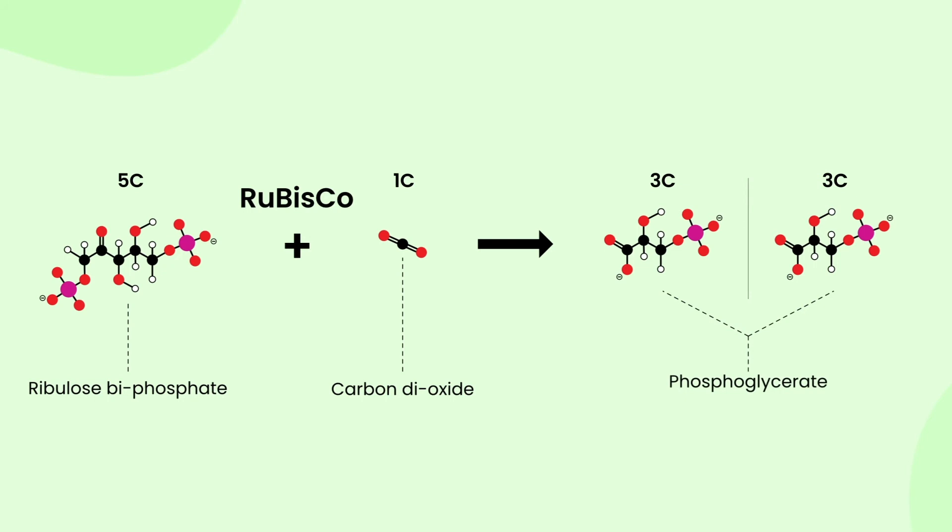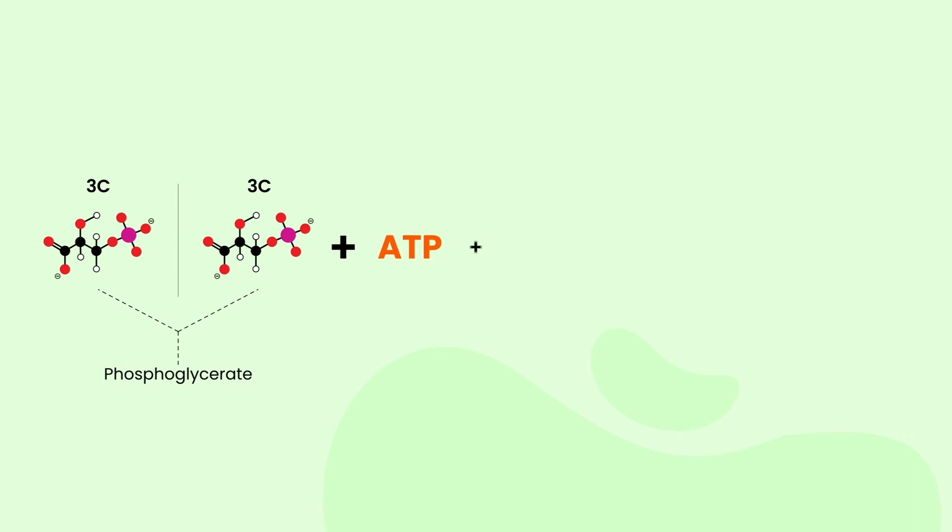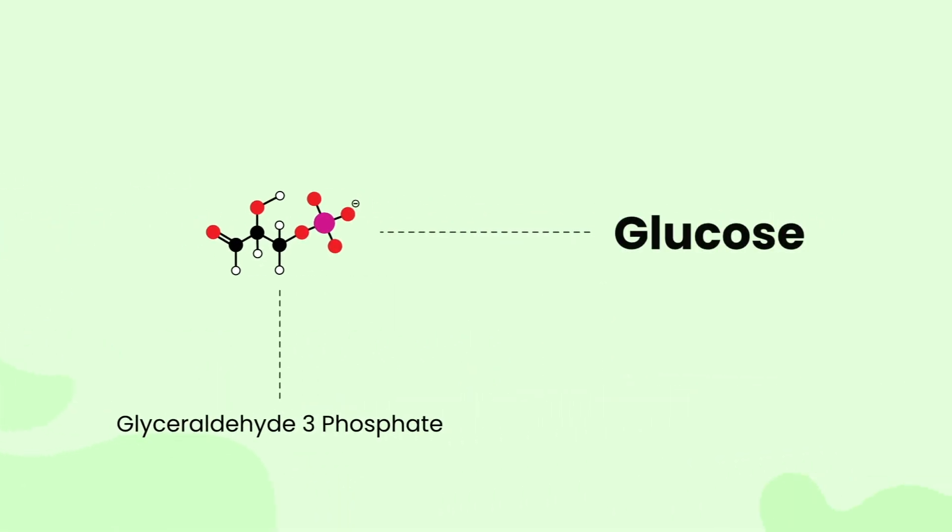which is later then combined with the previously formed ATP and the NADPH to form glyceraldehyde 3-phosphate, which is G3P, which is nothing but sugar molecules. These sugar molecules can be later formed as glucose, sucrose, maltose, etc.